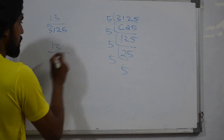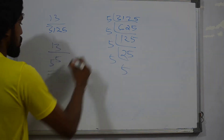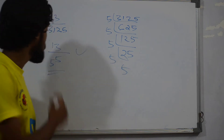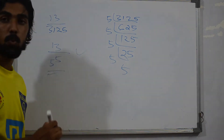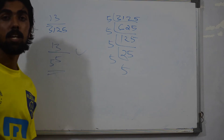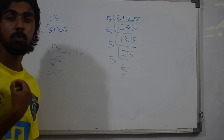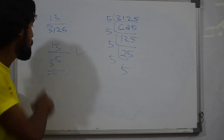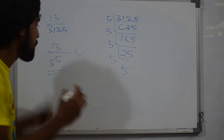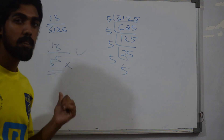13 by 3125 equals 13 by 5 raised to 5. Yes, this is a terminating decimal. We check whether q is of the form 2 raised to n and 5 raised to m. Here the denominator is in that form, so the decimal terminates.